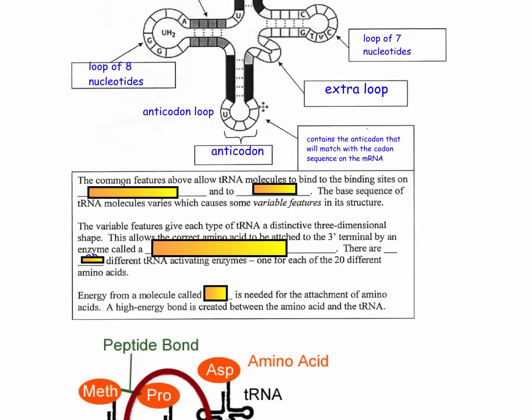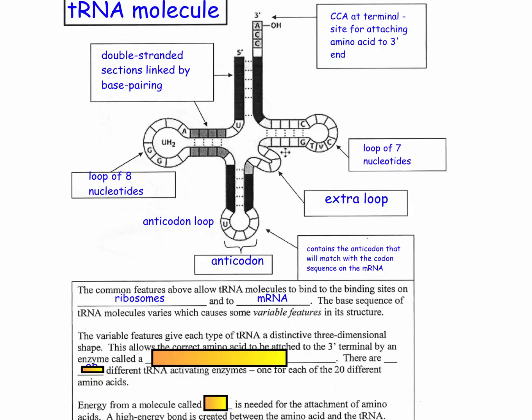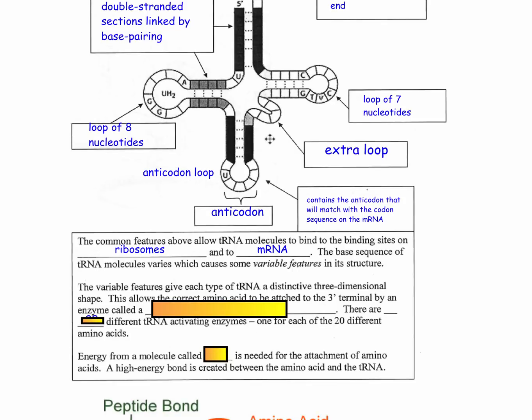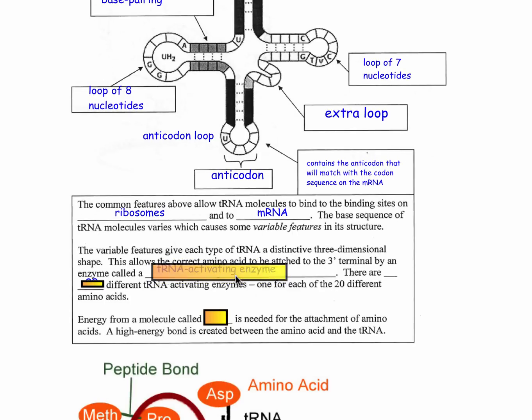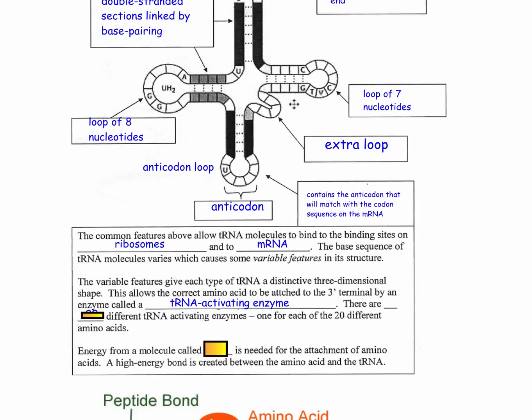So down here, you can take a look really quickly. The common features above allow all tRNA molecules to bind to the binding sites on ribosomes and mRNA. There are some variable structures, for example, the anticodon here, which will help to determine the exact shape. That's how the specific tRNA activating enzyme can recognize this particular thing. The tRNA activating enzyme is specific to a specific tRNA molecule and it will help to bring the amino acid up here.